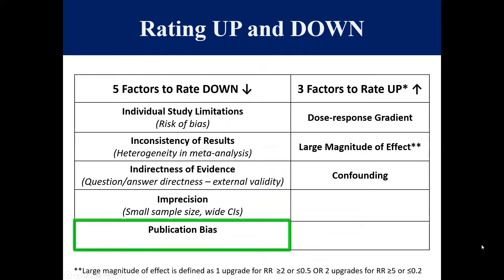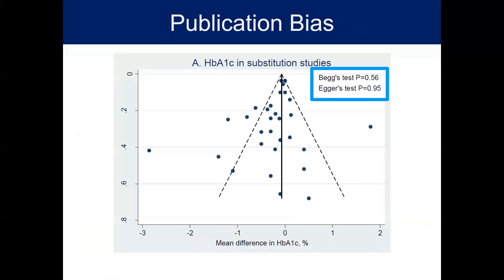Next is publication bias. If the assessments of publication bias performed in the SRMA were not significant, it will likely be judged not to downgrade for publication bias. If it was significant, there may be reason to downgrade. However, there are methods which can be applied to address publication bias, like a trim and fill analysis, which can provide additional information for assessing whether one should downgrade. For example, if there is no great asymmetry in the funnel plot and neither the Egger's nor the Begg's tests are significant, we may judge not to downgrade.